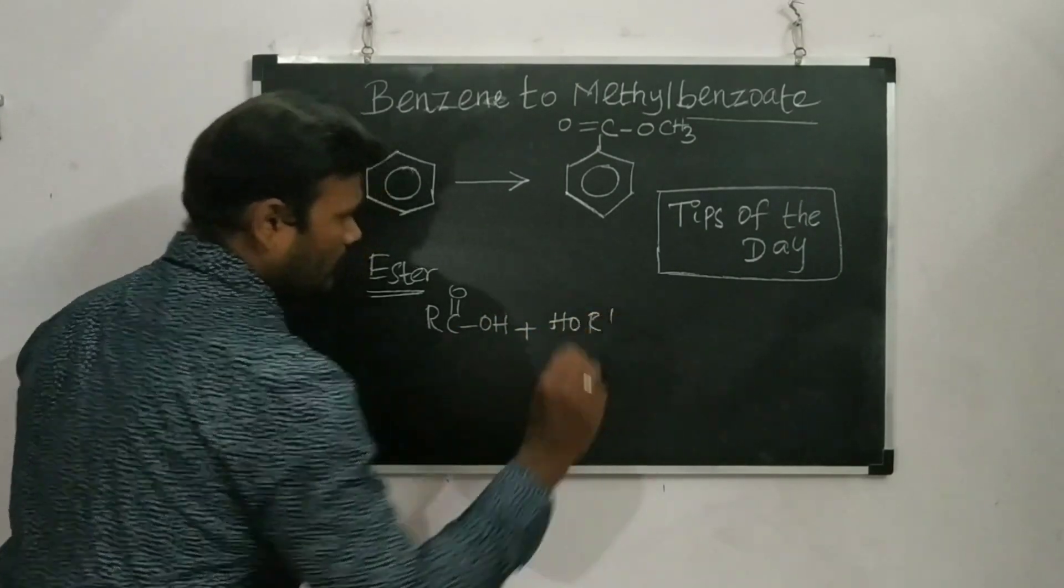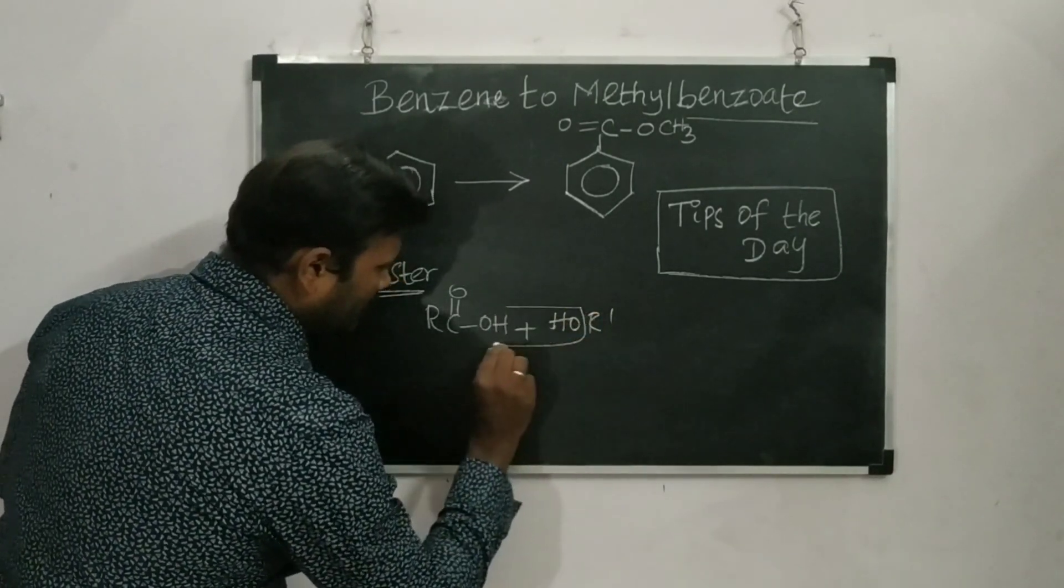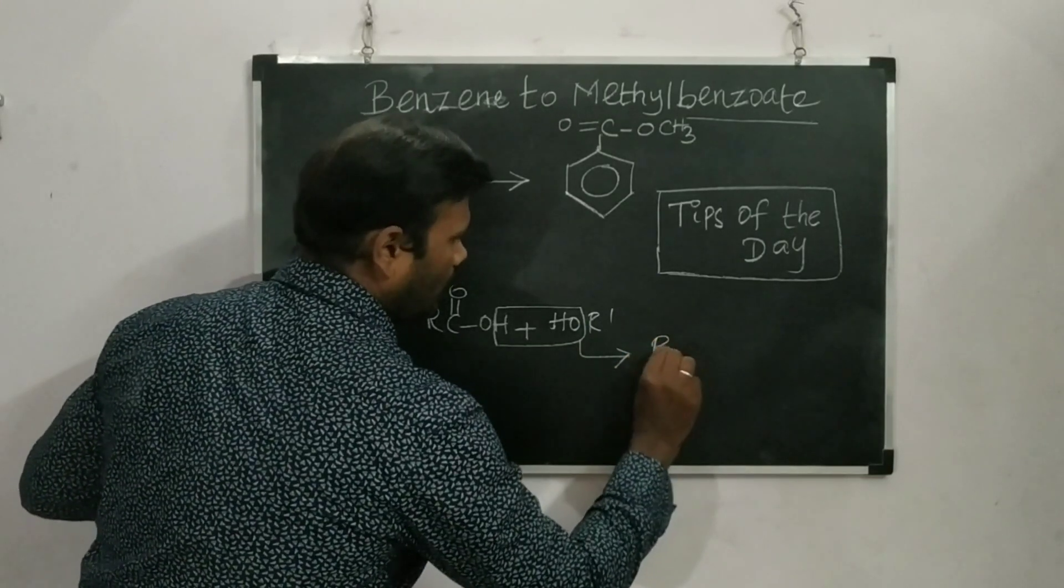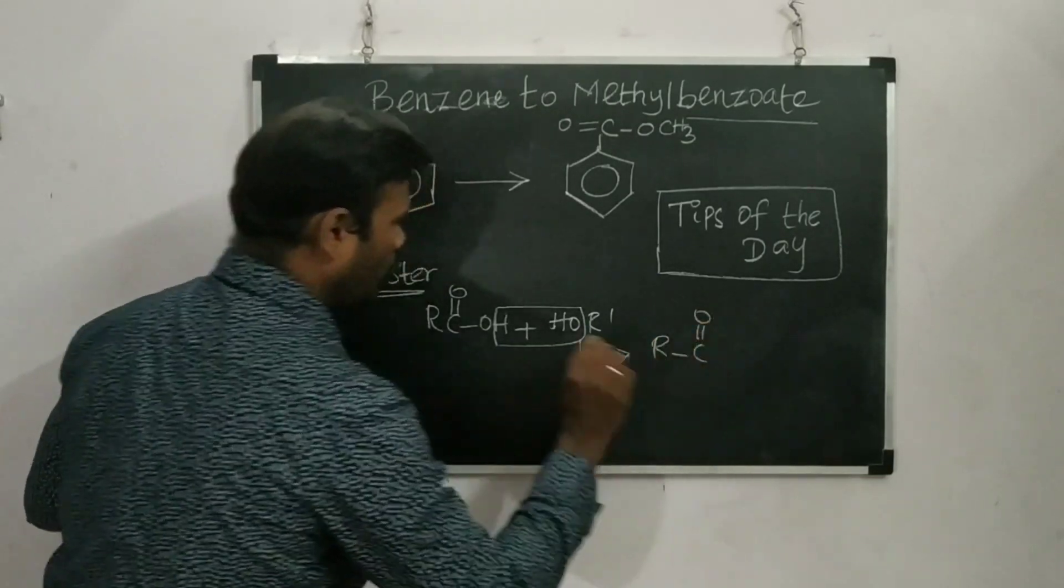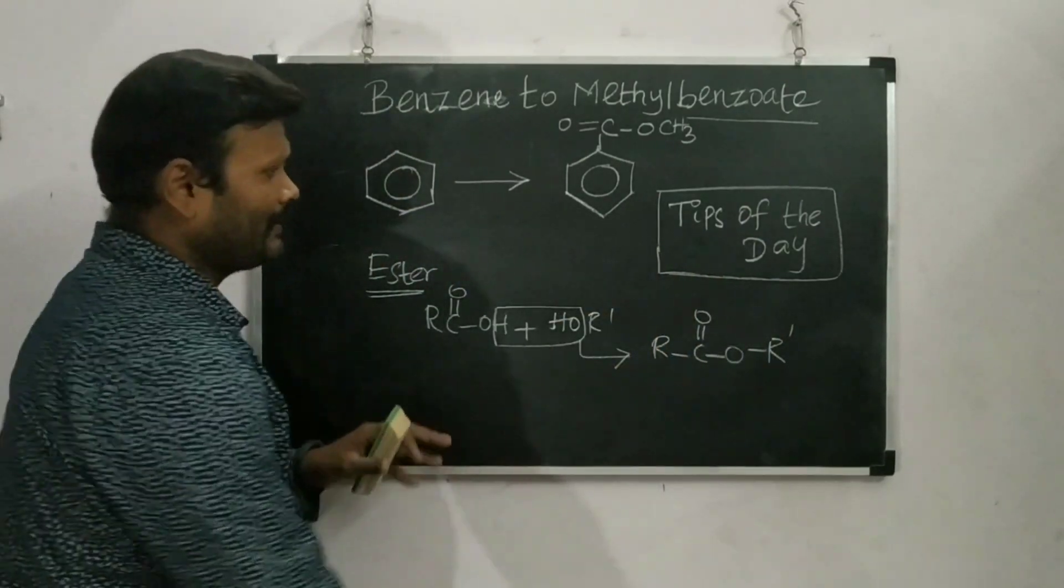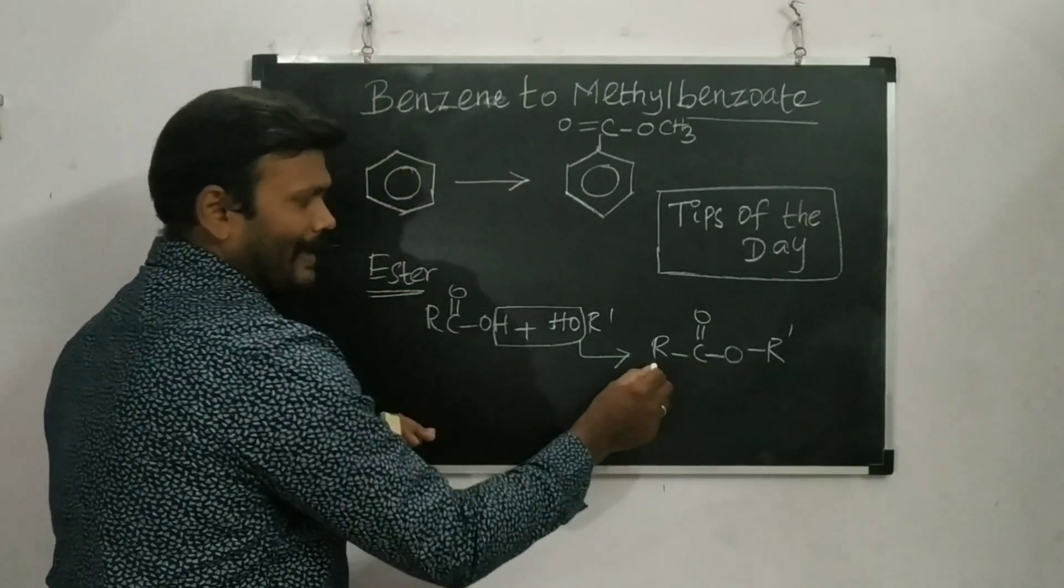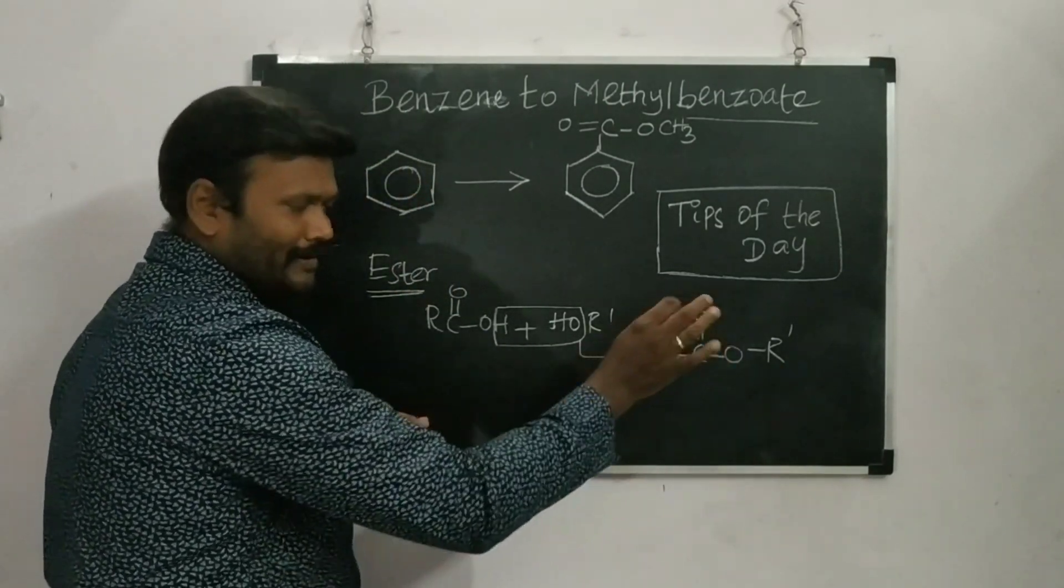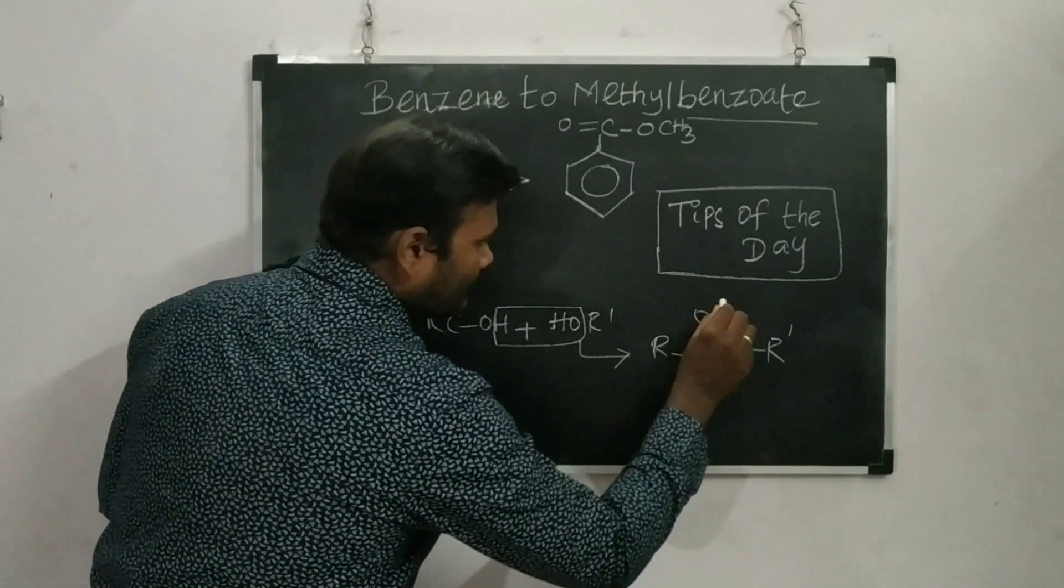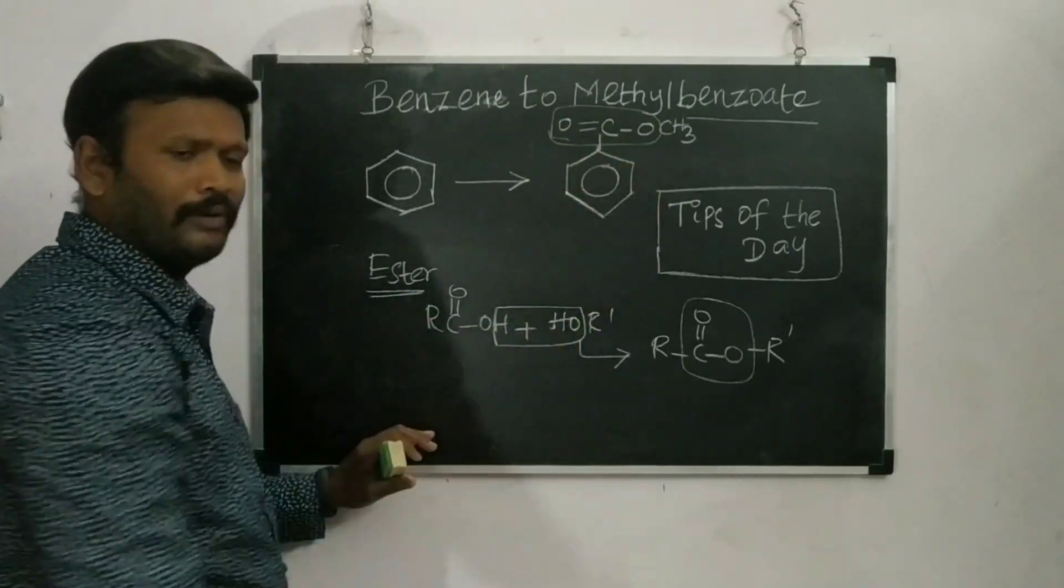If I am taking RCOOH and R'OH, there will be elimination of water molecule. By that way I will be getting a product that is R-C double bond O-O-R'. For this particular product, you add R and R'. Now you can see the difference between these two. C double bond O group is there. This group is common.